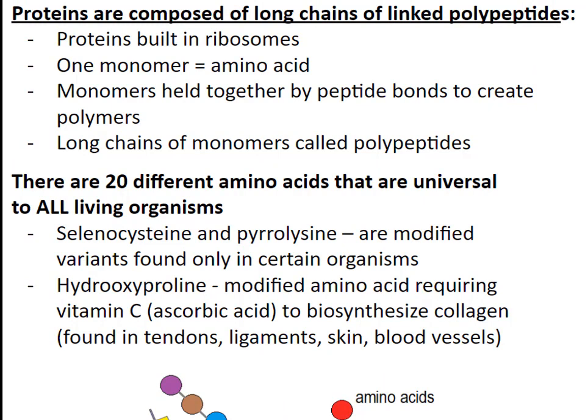So in short, proteins are long chains of linked polypeptides, which are large chains of amino acids. These amino acids get held together with special bonds called peptide bonds. There are 20 different amino acids that are universal to all living organisms — just 20. Well, there are two modified variants found in certain organisms, but 20!